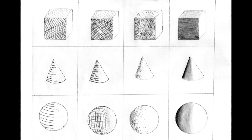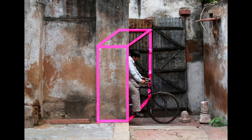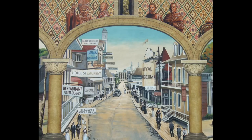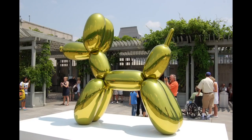When given form, circles become spheres, squares become cubes, triangles become cones or pyramids. Form takes up space in either a real or implied way. In paintings and drawings, form is implied because it's an illusion of three dimensions. With sculpture, on the other hand, form is real because it takes up three-dimensional space.